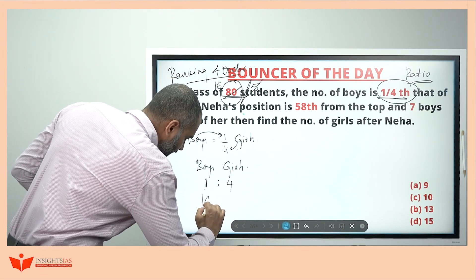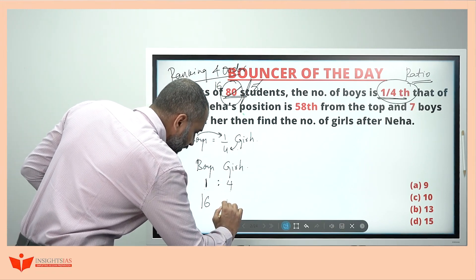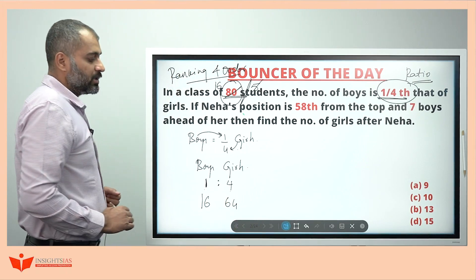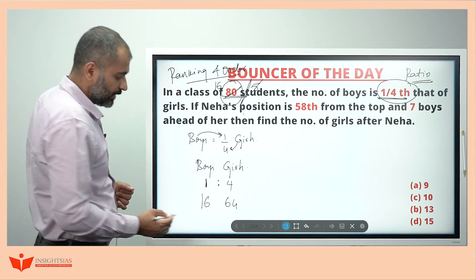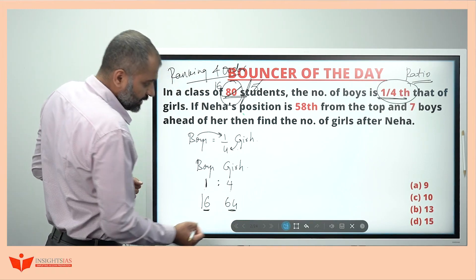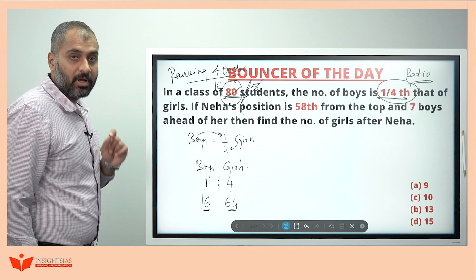So sixteen boys are there and the remaining are girls — that is sixty four girls. Sixteen boys, sixty four girls.